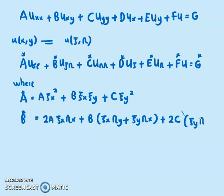Plus 2C psi_y eta_y. And then we have C* is given as A eta_x squared plus B eta_x eta_y plus C eta_y squared.